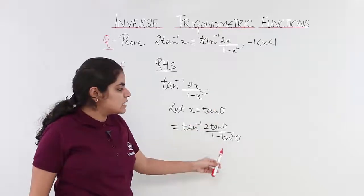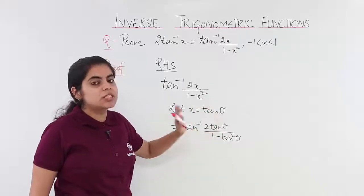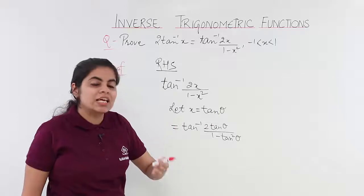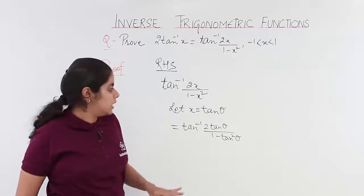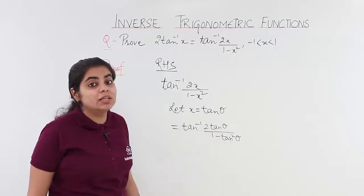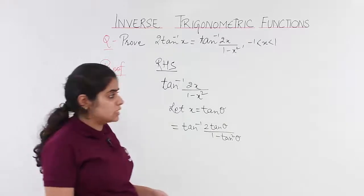1 minus tan square theta. As it is in the previous step, we are just substituting x as tan theta. Now, 2 tan theta upon 1 minus tan square theta - is this a formula? Yes, it is.